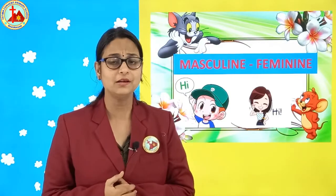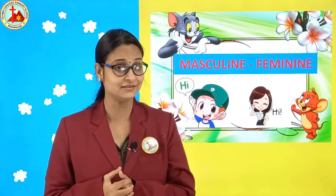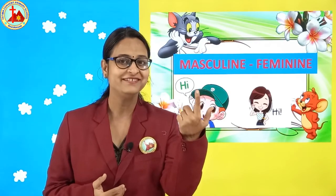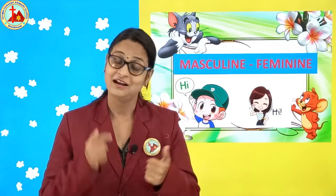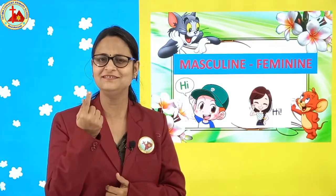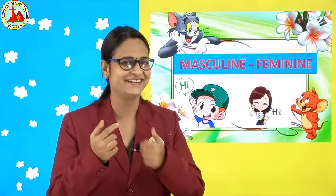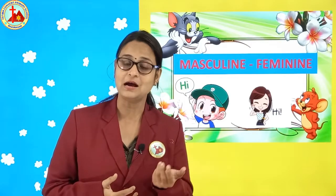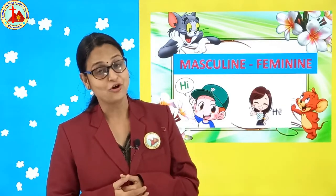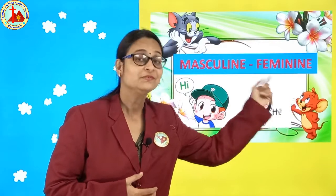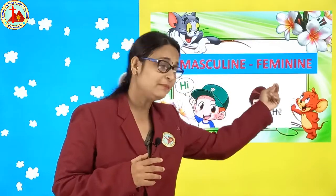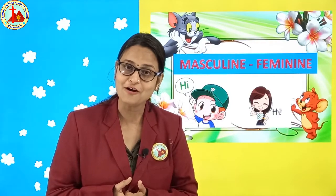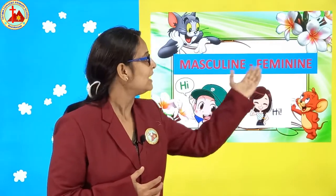Now give me some examples of feminine gender. Mama — very good. One more. Grandma — good. One more example. Sister — very good. So children, sister, grandma, mom — these all are feminine gender. Today we will see some more examples of masculine and feminine.